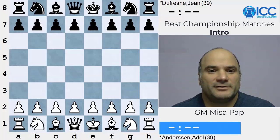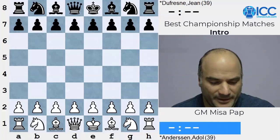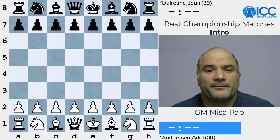Let me just mention one thing I forgot to mention before. I was talking about De Chapelle and Labourdonnais, and there was an important match to mention - important for chess history - which was played between Labourdonnais and Macdonald. It was played in 1834 in a format of six matches, 85 games total, and it was won by Labourdonnais.